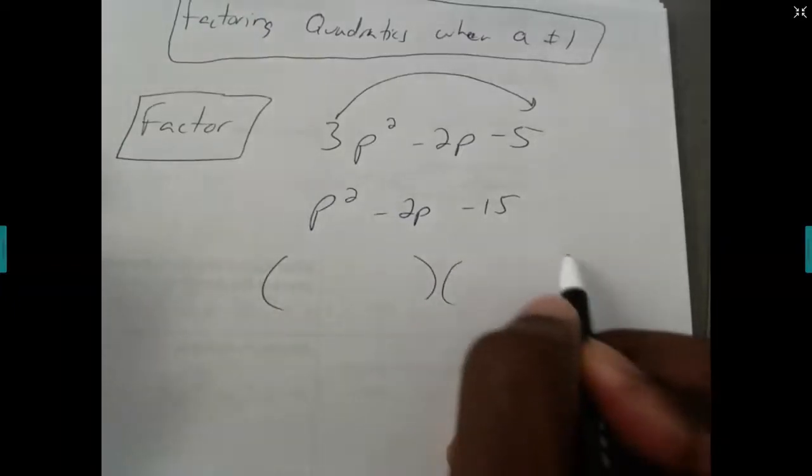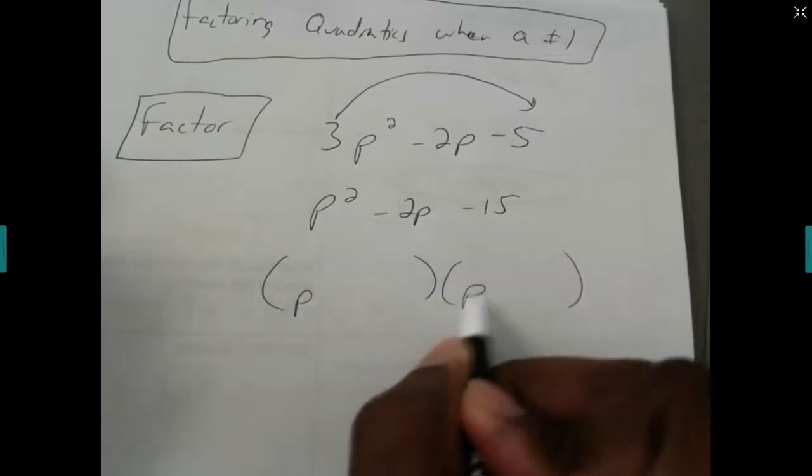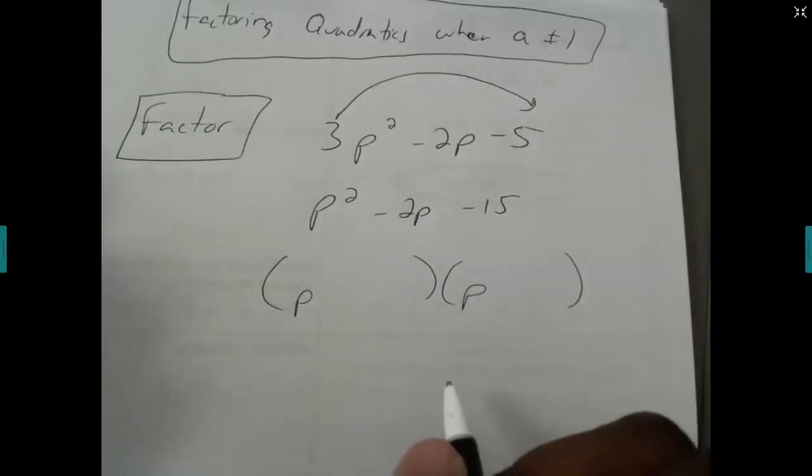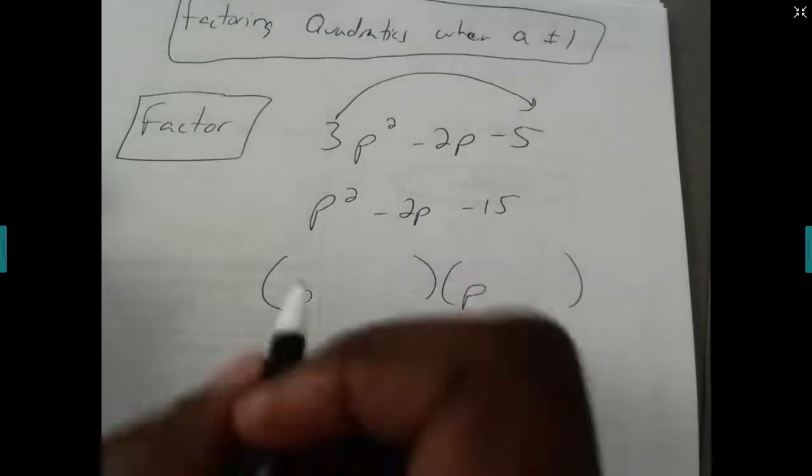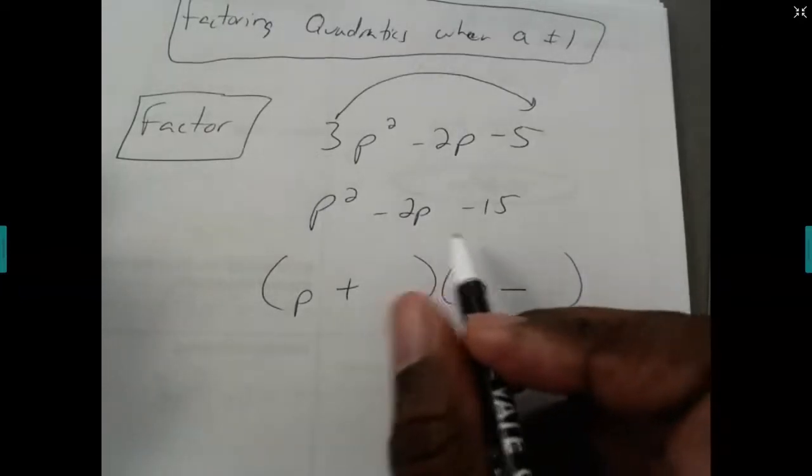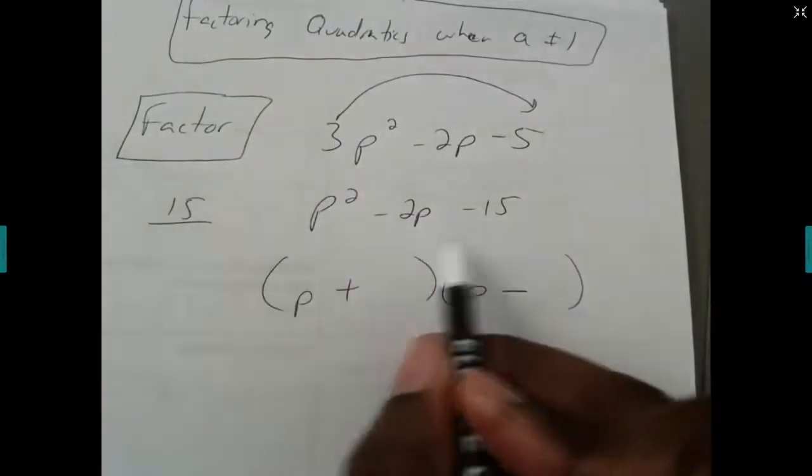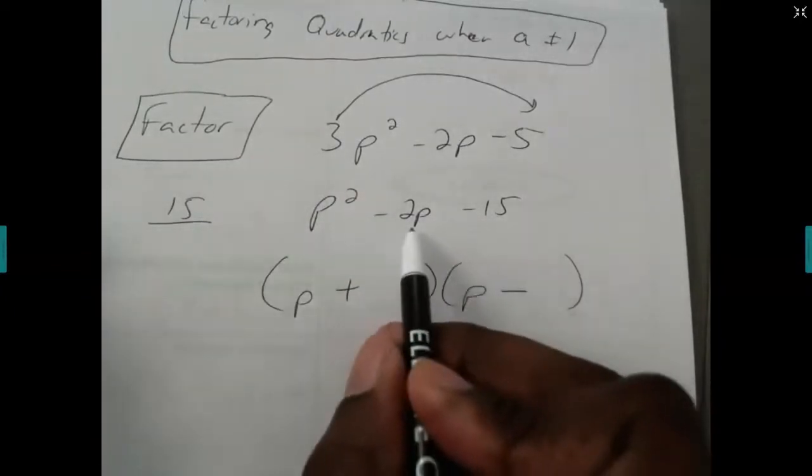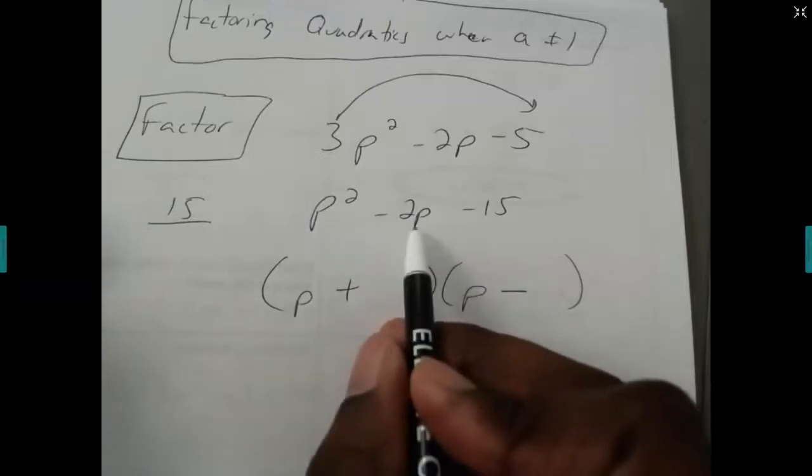So we begin with two sets of parentheses. Because that's p squared, we're going to start with p and p. And then we have unlike signs, so that says subtraction. So I know that one sign is going to be positive and one sign is going to be negative.